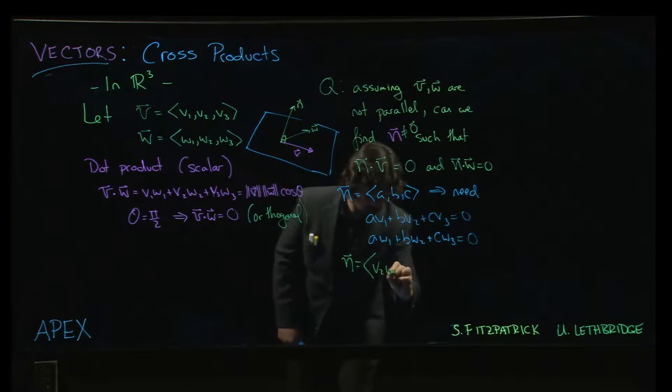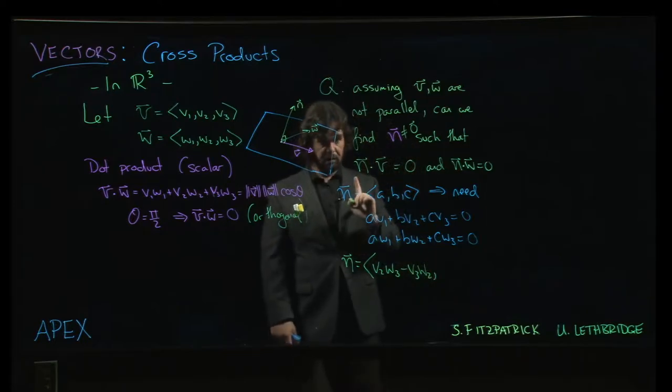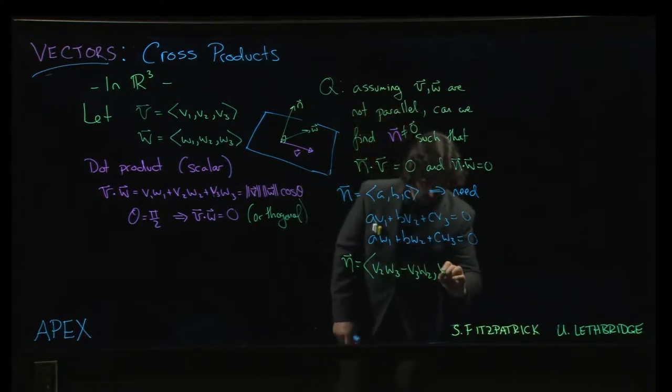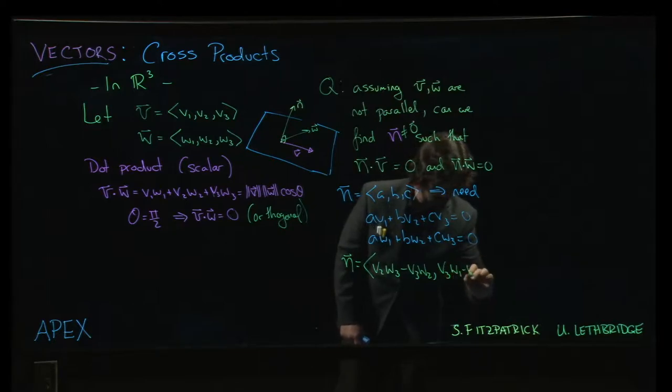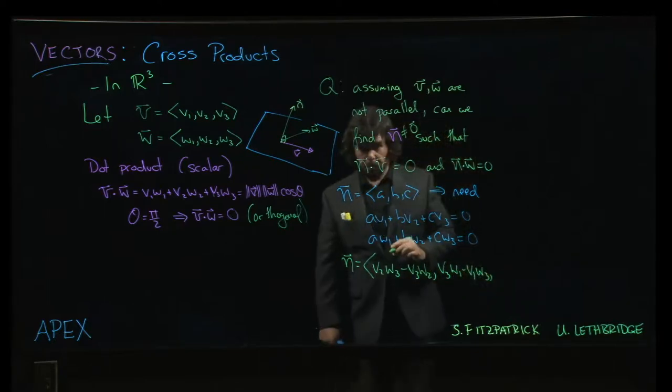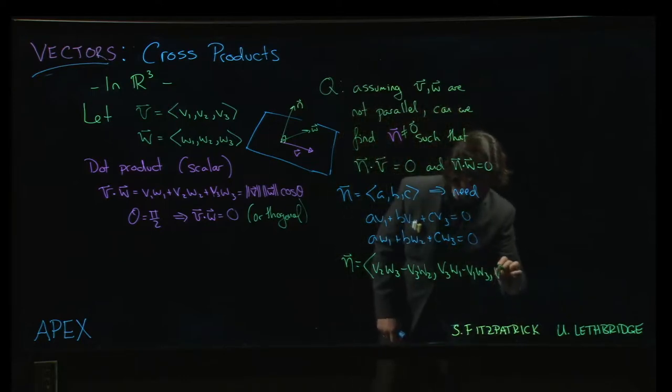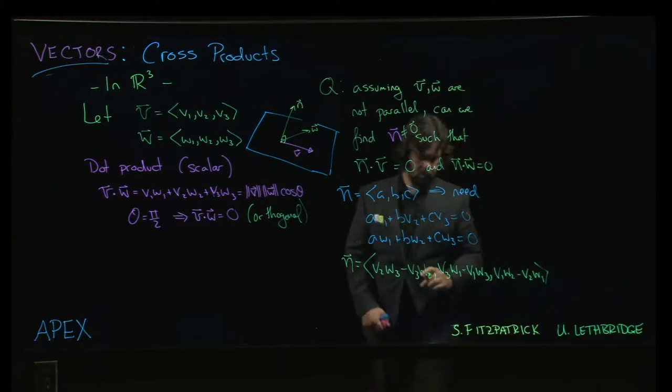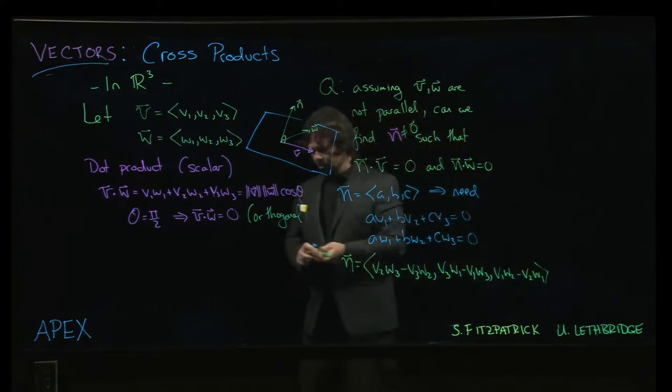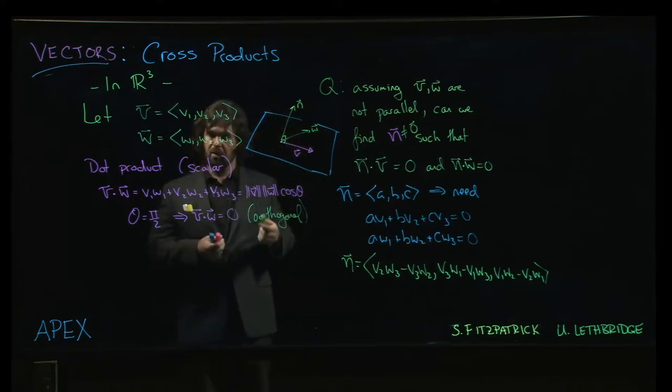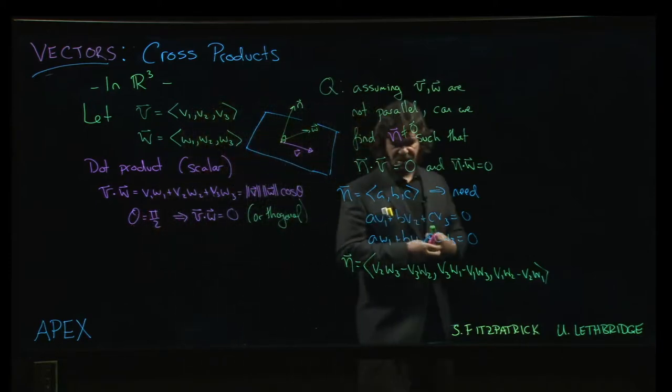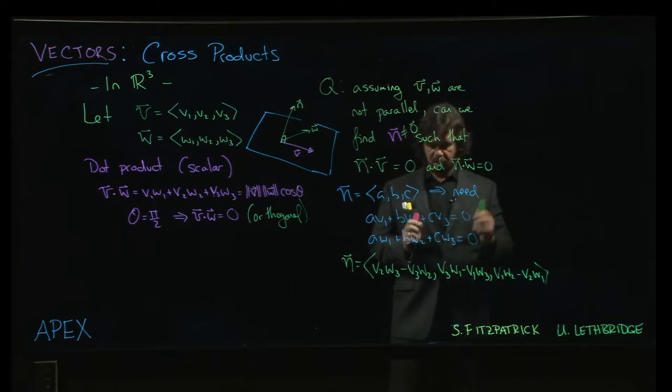It looks like this. It's v2 times w3 minus v3 times w2 in the first spot. Notice in spot number one, we have the two and three components. In spot number two, we're going to have the three and the one components, so v3w1 minus v1w3. There is a pattern to this. In spot number three, we get the one and the two components, so v1w2 minus v2w1. This sort of falls out as a solution to this pair of equations. You work through the details and you figure it out. They're not pleasant details, so I'm not going to go through them. But you can try them yourself if you want.